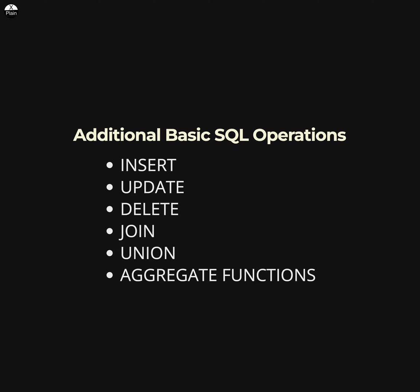The UNION operator is used to combine the result sets of two or more SELECT statements into a single result set. Aggregate functions are functions that operate on a set of values and return a single value. Some common aggregate functions in SQL are COUNT, SUM, AVERAGE, MIN, and MAX.